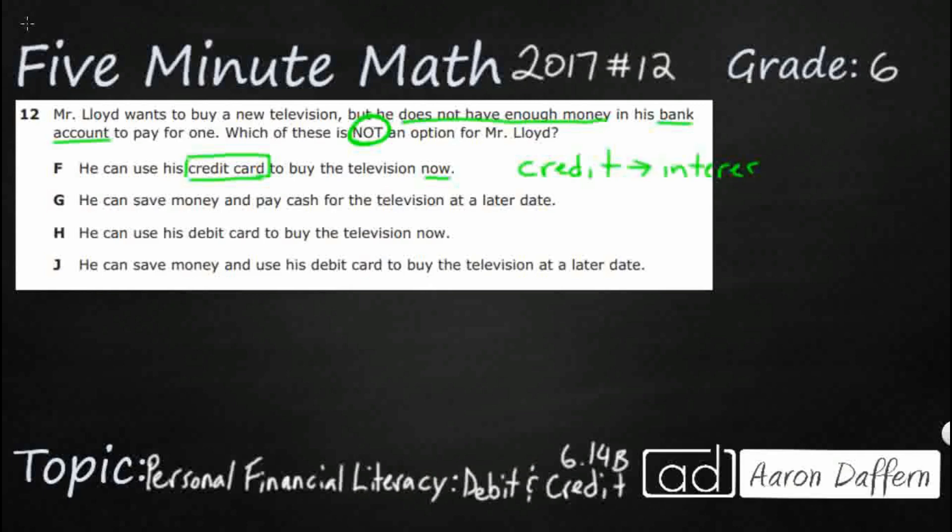The problem with the credit card is credit card has interest and sometimes it even has yearly fees. So yes, you can always use your credit card at any point as long as you're not over your limit because credit cards have credit limits. You can't just buy a new house on a credit card. But if you do not have enough money to pay for the entire balance at the end of the monthly billing cycle,